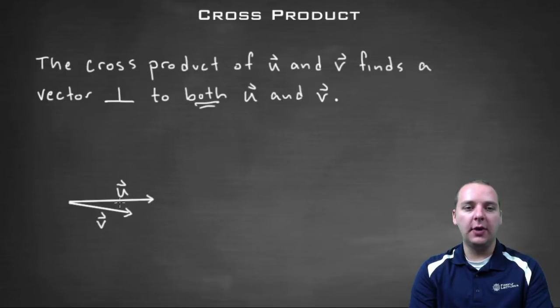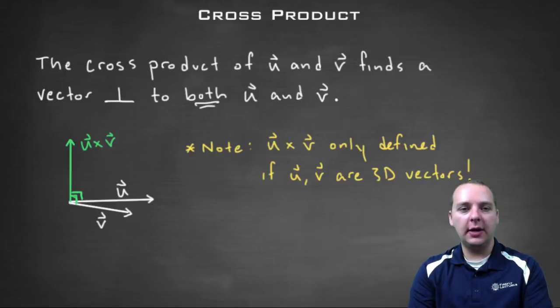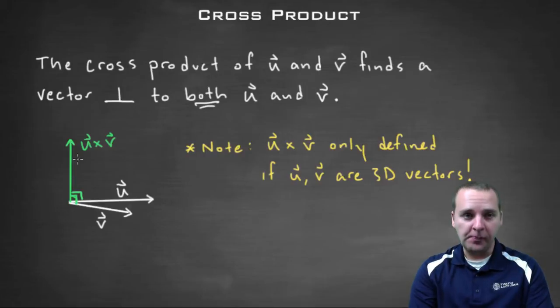So here I've got two vectors drawn and so the cross product of these two guys will look something kind of like this. Notice that it meets both of these at a right angle as you can see here.